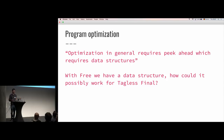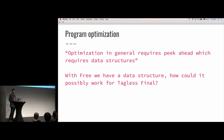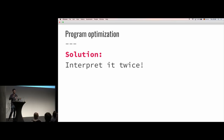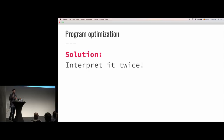I want to look at those two advantages for free and basically mitigate them so that there are no more advantages for free. The first thing is program optimization. Someone once told me — paraphrased — that optimization in general requires peek-ahead, which requires data structures. That seems pretty logical. So if we don't have a data structure, how could it possibly work for tagless final? Well, one solution is to interpret things thrice. We have this program, and before we interpret it into something like IO where we actually want to run it, we could interpret it into something where we can extract the useful information we need to create a more sophisticated, more knowledgeable interpreter.